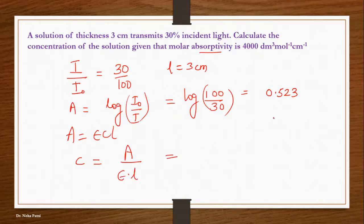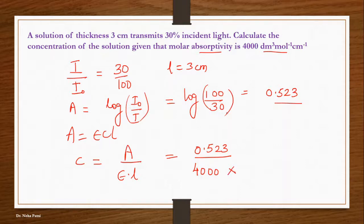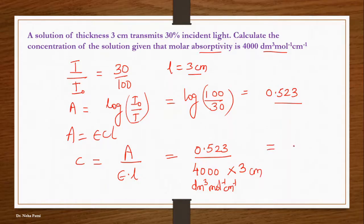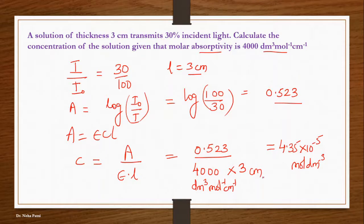Substituting the values: A = 0.523, ε = 4000 dm³ mol⁻¹ cm⁻¹, and L = 3 cm. When you cancel the units — dm³ and cm cancel appropriately — you get a concentration of 4.35 × 10⁻⁵ mol per dm³. The unit is moles per decimetre cubed because the molar absorptivity was given in those units. Ultimately, A = ε·C·L is the equation you always use.